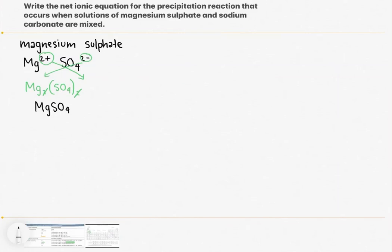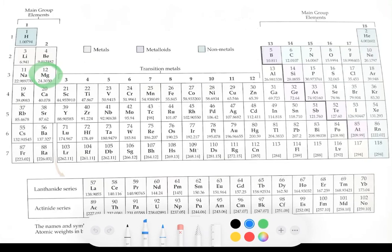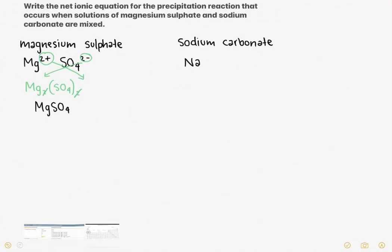Now we'll do the same for sodium carbonate. Sodium carbonate is made up of sodium ions. From the periodic table, sodium is in group one, so it has a charge of 1+. When ions have a charge of 1+ we just put the plus sign without the one. Carbonate is another complex anion you need to remember: CO3 with an overall charge of 2-.